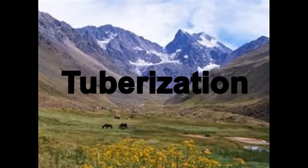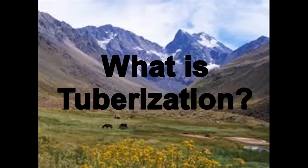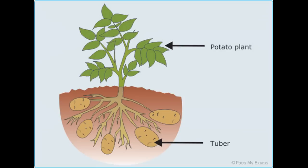Specifically, they had to adapt their tuberization. Now, what is tuberization? Well, it's defined as the ability to form tubers. That's helpful, right? Well, when you look at the potato plant, tubers are the things that we eat.